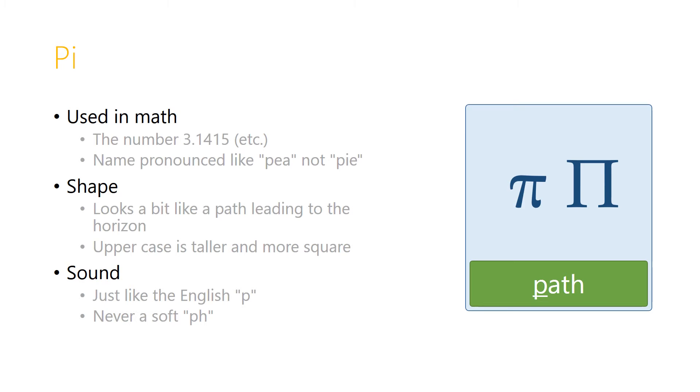The letter Pi is used in math, of course. It's used to represent the number 3.1415 etc. And the name is often pronounced when we learn it there like pie, but the name of the Greek letter should actually be pronounced P.